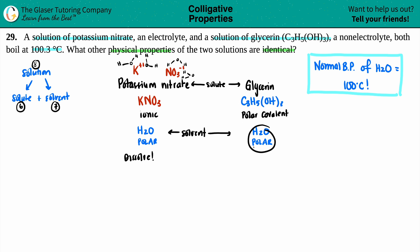Same thing goes for the glycerin. You have a polar covalent compound. It's coming together with something that's polar. Like dissolves in like. So this would also dissolve. And if they both dissolve, we know that both of these would be a homogeneous mixture. So that is one physical property that these solutions have that are identical.